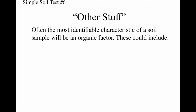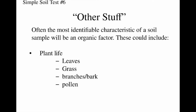For our last basic observational test on soil samples, we're going to call this category the 'other stuff' — essentially, what else is in that soil sample that's not actually soil? Often the most identifiable characteristics of a soil sample are going to be these other factors, potentially organic ones, that are included in the soil. Things like plant life: are there leaves, grass, branches, bark, or pollen? All of these organic samples can give us a clue as to where that soil came from. We might also find specific bugs or animal excrement, which again can indicate where the sample came from and provide one more comparison factor between a sample found on a suspect and a sample from the crime scene.